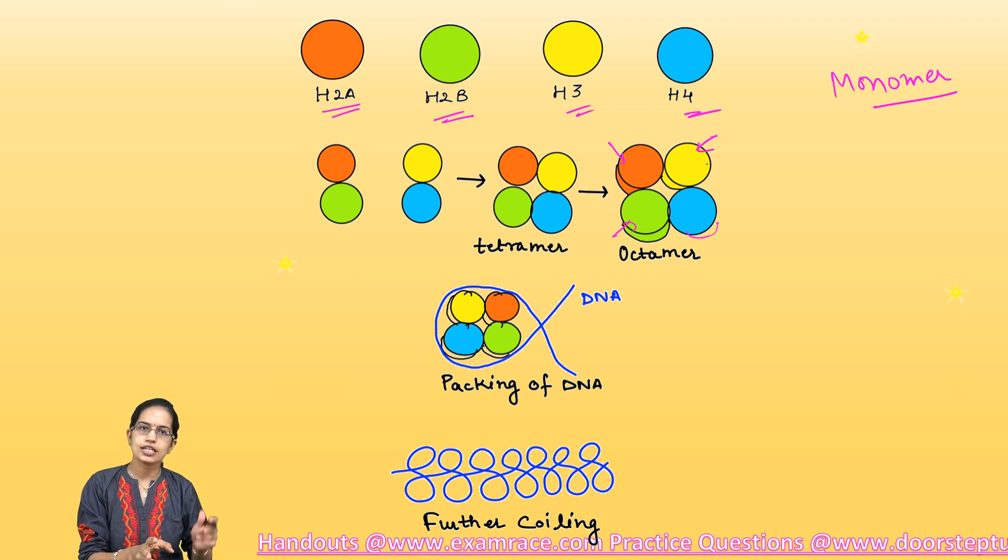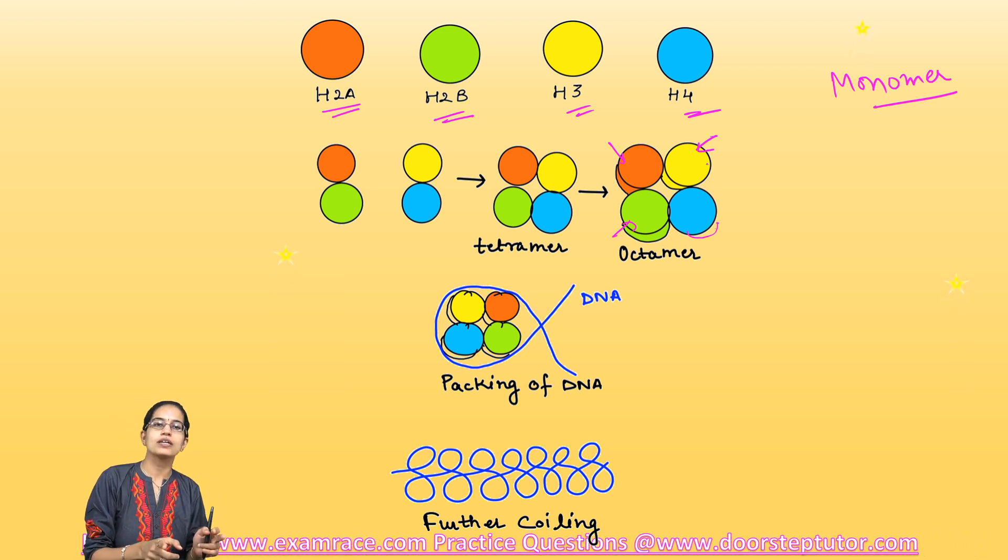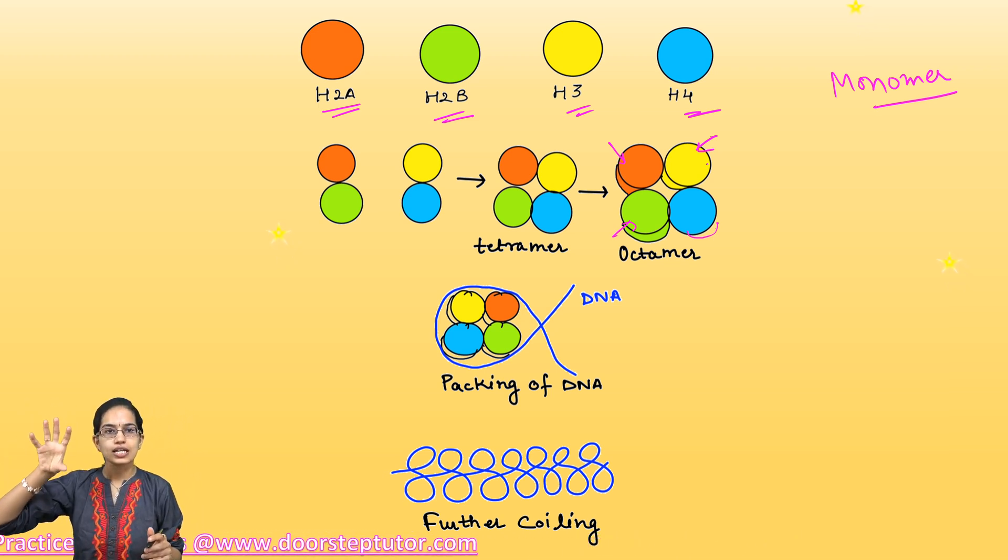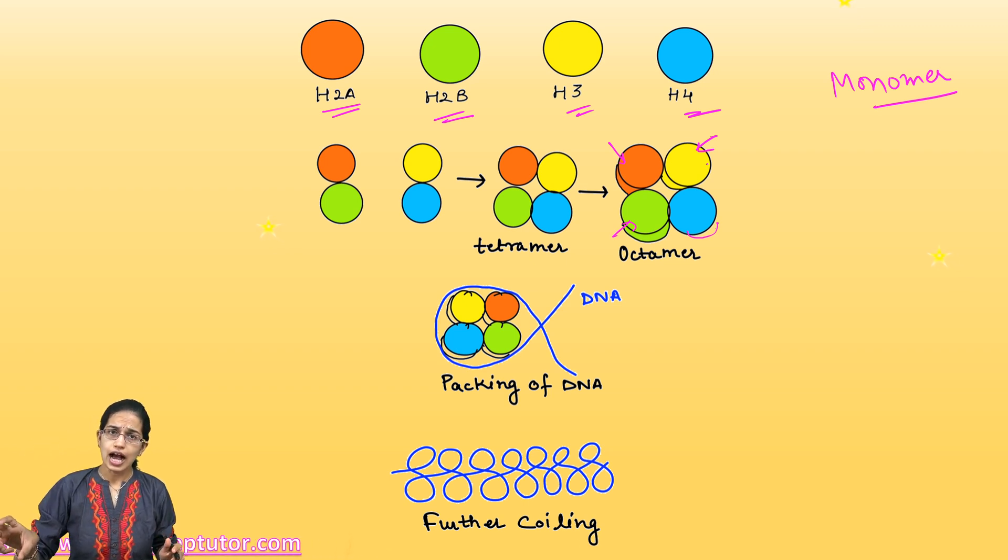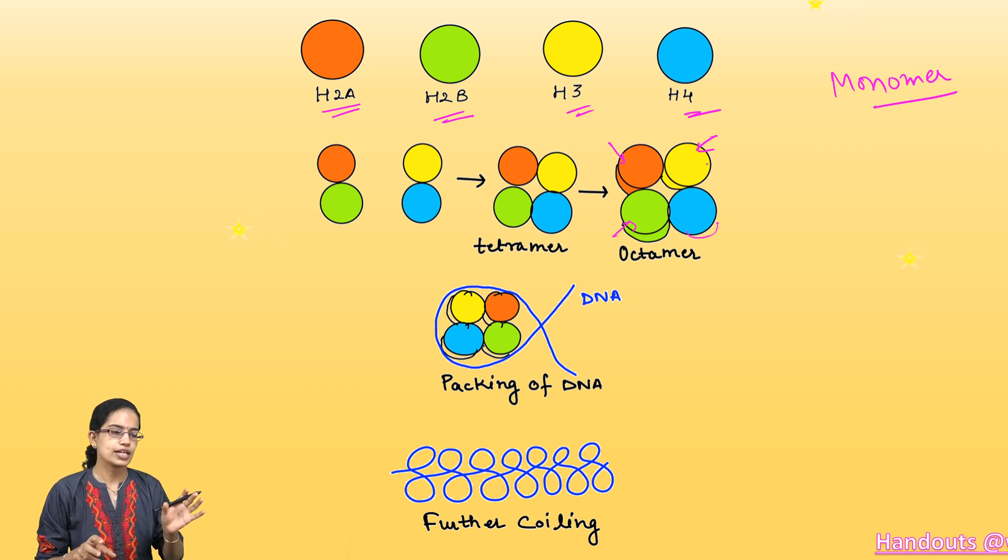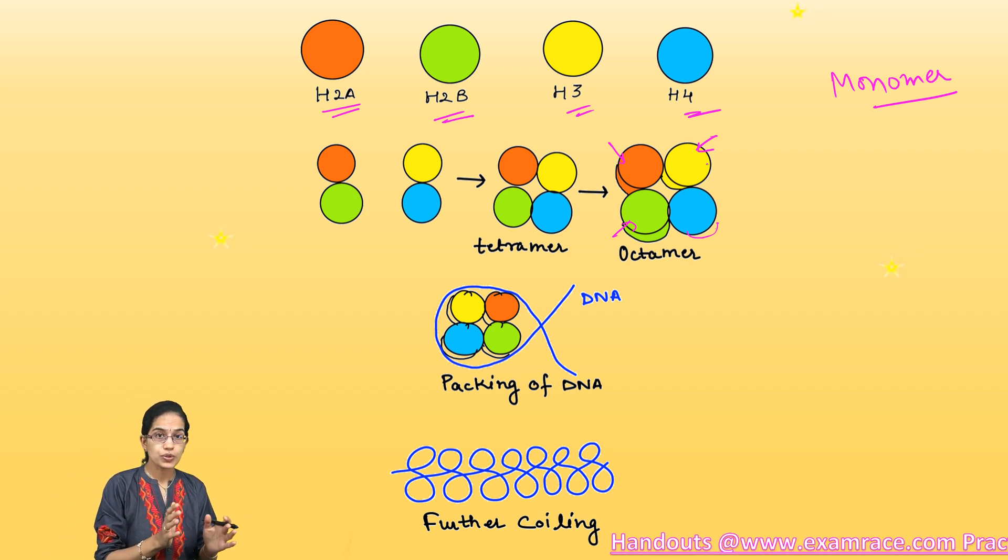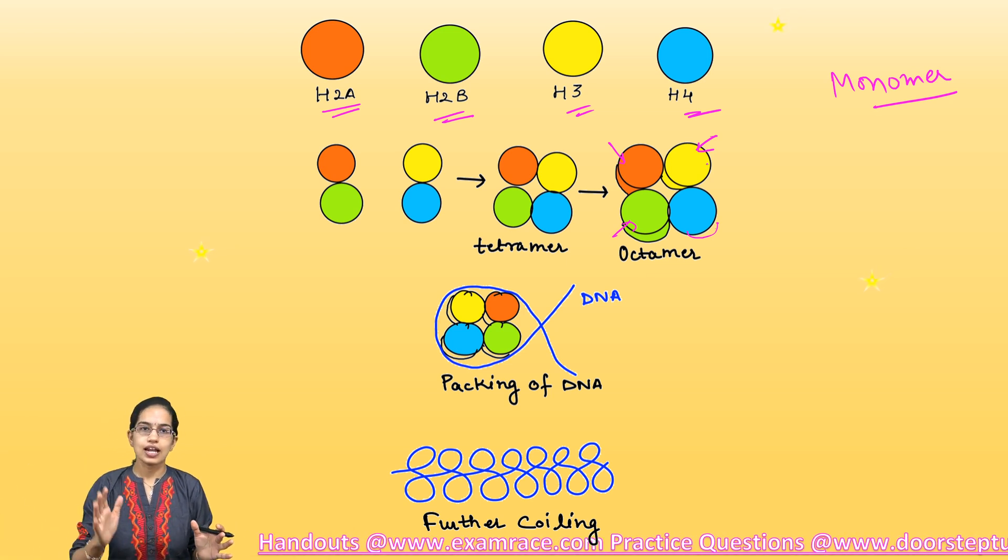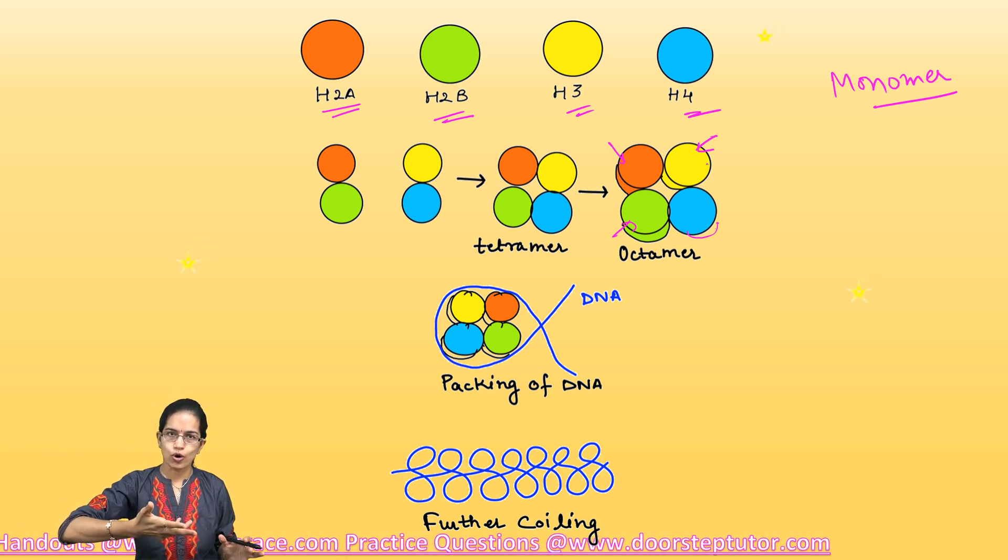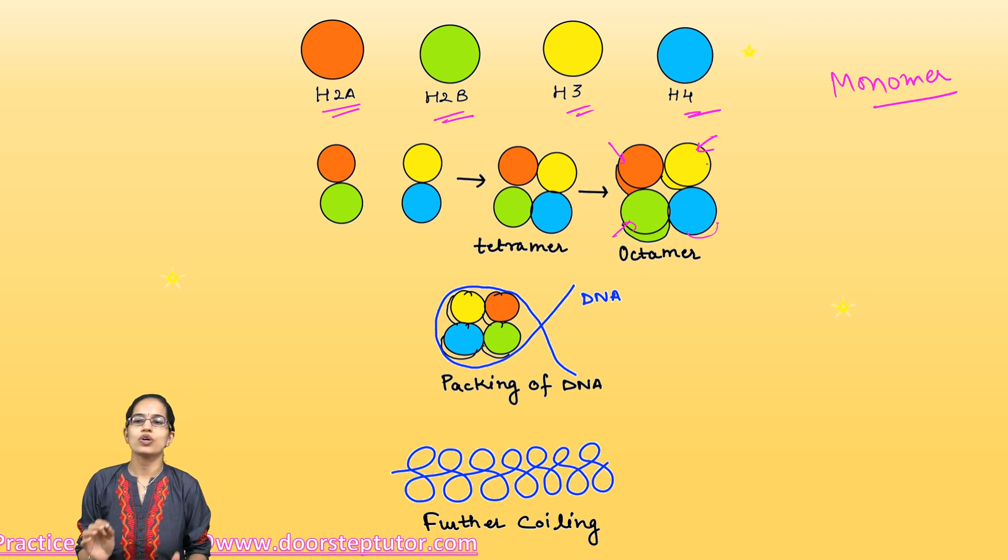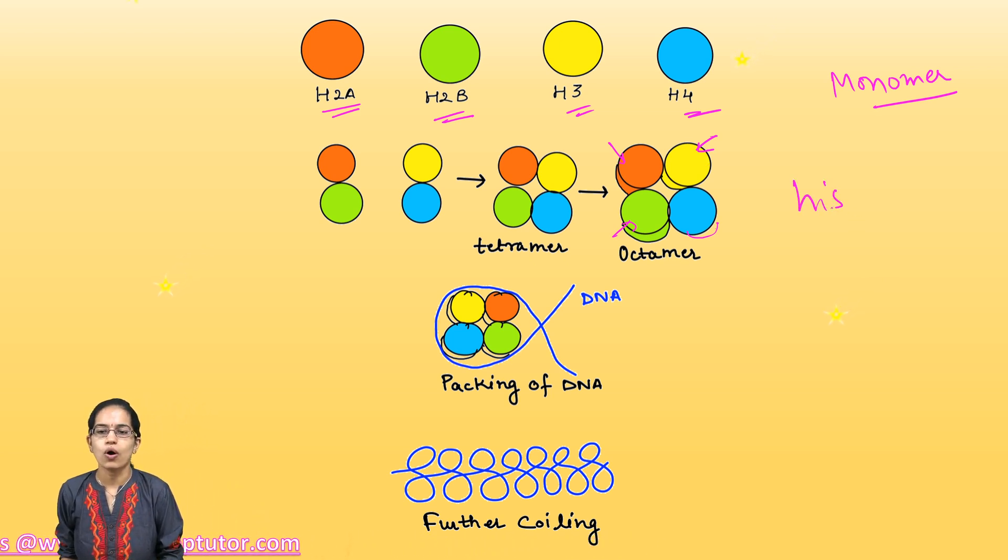Dimer is being brought and as we said, the core histones always exist as dimer. So 2H3, 2H4, 2H2B, and 2H2A would be there. When each of these single molecules are there, we call it as monomer. When there are two of those, we call it as dimer. When these dimers come together, we call them as tetramer. And when there are all these four and double copies of all these four, this would be an octamer. So this is what is known as histone octamer.